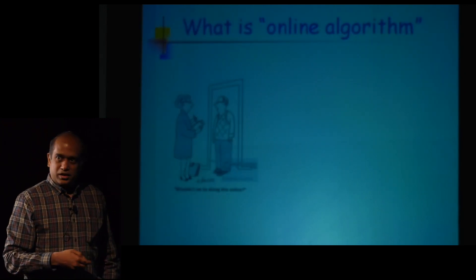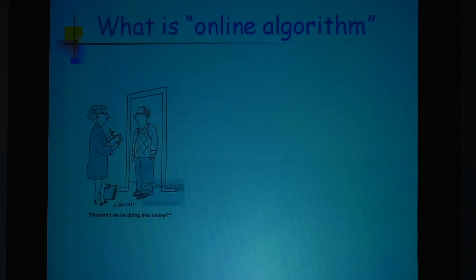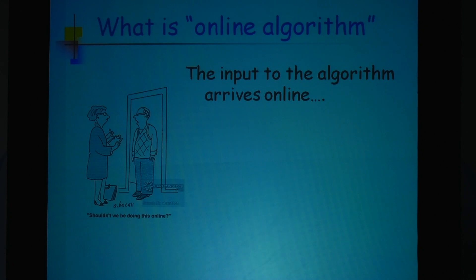Let me begin with a two-slide introduction to what an online algorithm is. Online — you often go online to buy something — but in the context of algorithms, online basically means that you don't know everything in the future.